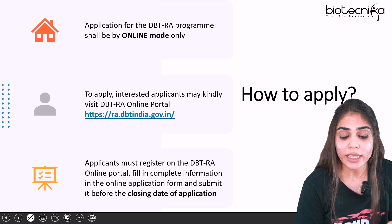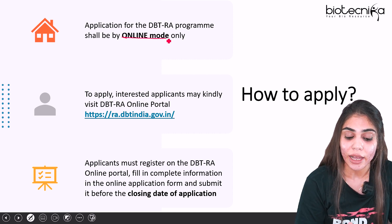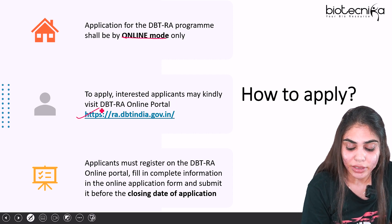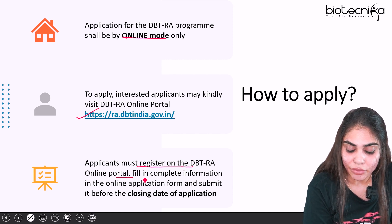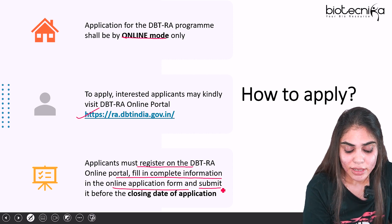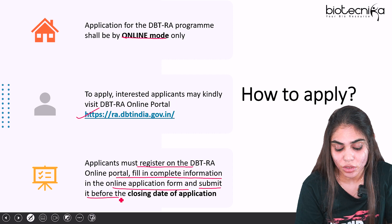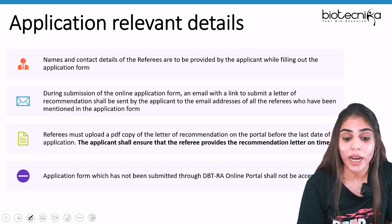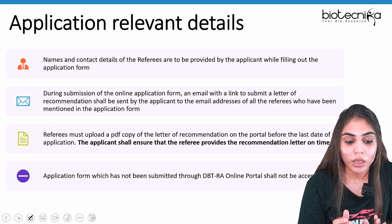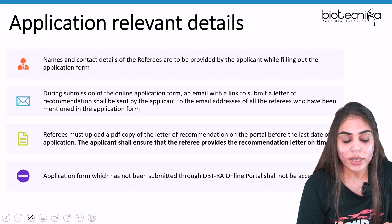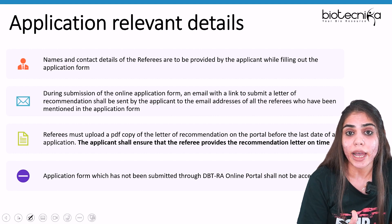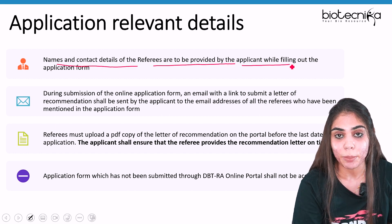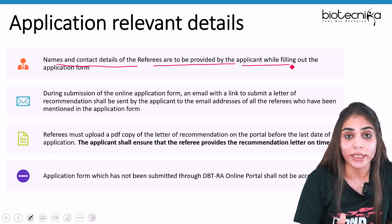How to apply for this DBT-RA fellowship: the application is made online. You have to visit the DBT-RA portal at ra.dbtindia.gov.in, first register, then fill in complete information in the online application form, and submit it before the closing date. While filling the application form, you will be asked for the name and contact details of referees — including their contact number and email ID.